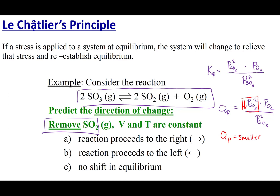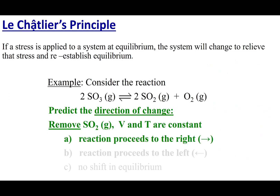If it was at equilibrium and I made Qp smaller, that means Qp is now less than Kp. From my last lecture, I know I'm going to have to make more products and shift my reaction to the right. Another way to look at this is conceptually: you had something at equilibrium, you removed some SO2, and because you removed it, I want to alleviate that stress and make more SO2. So I alleviate or counteract what you just did to the system at equilibrium.